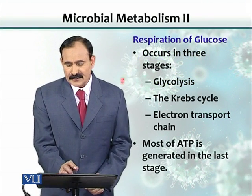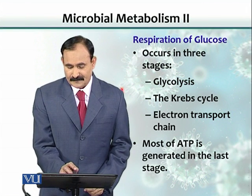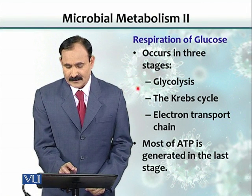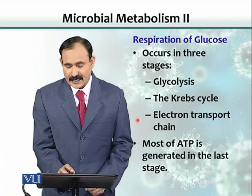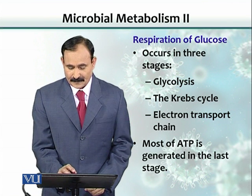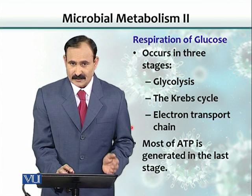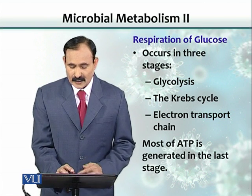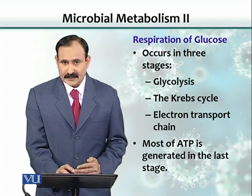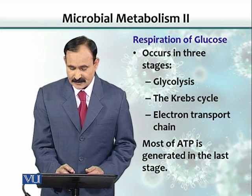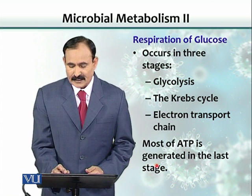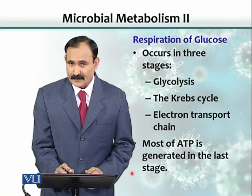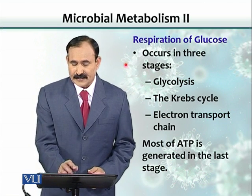Respiration of glucose is basically a three-step procedure: there is glycolysis, then there is the Krebs cycle, and then there is an electron transport chain through which the electrons go and ultimately result in ATP synthesis. Most of the ATP is generated in the last step of this respiration.